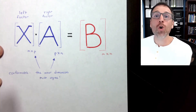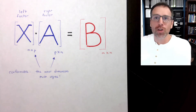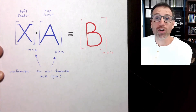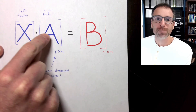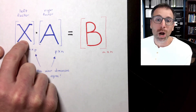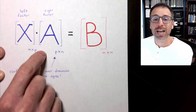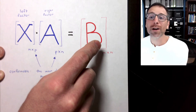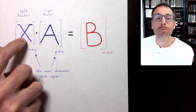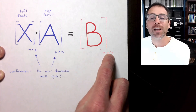One recurring theme is to analyze dimensions explicitly. In matrix-matrix multiplication, the inner dimensions must agree. So when our modeling matrix is in the right factor and we hit it on the left with an algebraic worker, the number of columns of our algebraic worker must align with the number of rows of the modeling matrix. Once those inner dimensions align, the dimensions of the product B are defined by the outer dimensions: the number of rows of X and the number of columns of A.